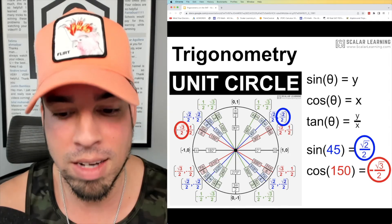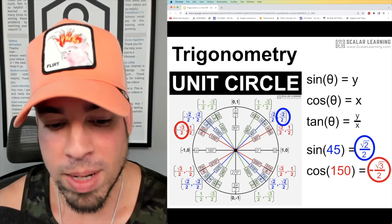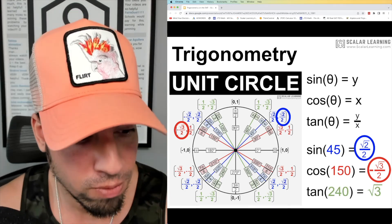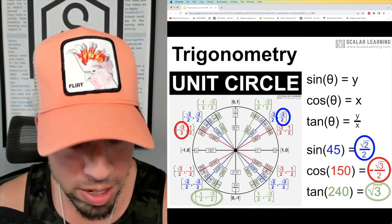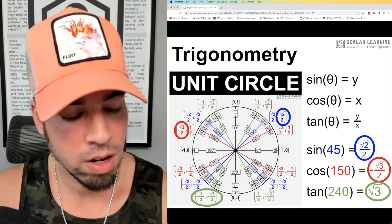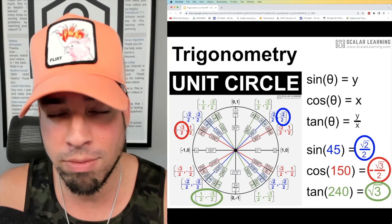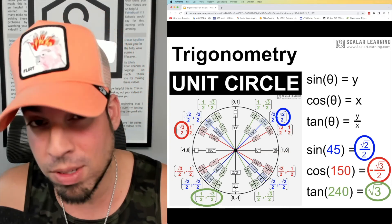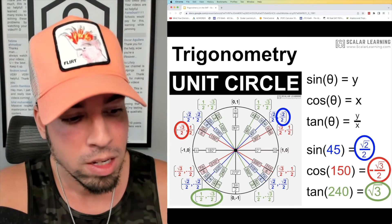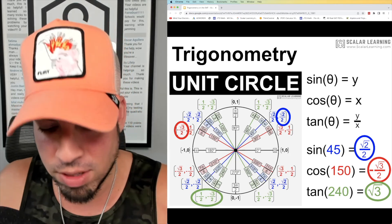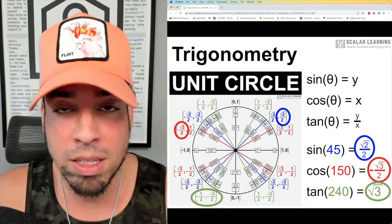Last but not least, we have tangent of 240. You can see that's in quadrant three, and that's going to be the ratio of the y divided by the x. So square root of three over two, negative of course, divided by negative one half. Dividing by negative one half is like multiplying by negative two, so you double that, and obviously the negatives cancel out and we get positive square root of three.